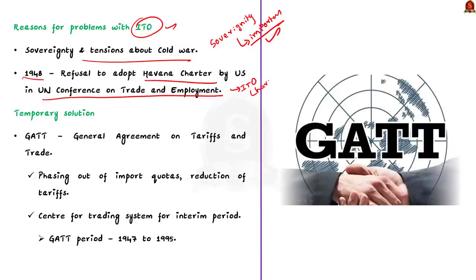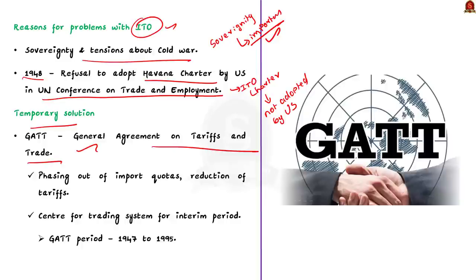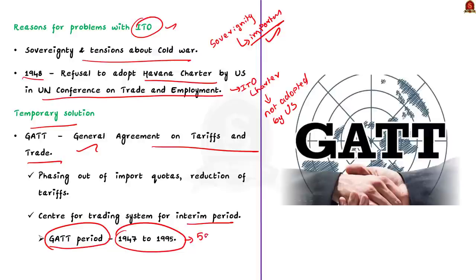But this charter was not signed by the US. So, side by side, countries relied temporarily on the GATT agreement — the General Agreement on Trade and Tariffs — for phasing out import quotas and reducing tariffs. GATT became the centerpiece of the trading system for an interim period, in the hope that the ITO would be revamped. But nothing happened. So the interim period of GATT became nearly half a century. GATT was created in 1947 and WTO came into existence in 1995 — nearly half a century during which GATT dominated world trade.